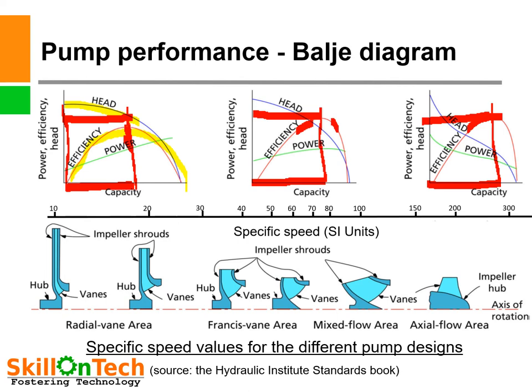Another difference visible in the diagrams is the shut-off head and power curve. Radial flow pumps take less power at shut-off compared to mixed flow and axial flow pumps. You can also see the specific speed classification of all three pump types: pumps with specific speed less than 30 come under radial flow pumps, and so on as shown in the diagram.